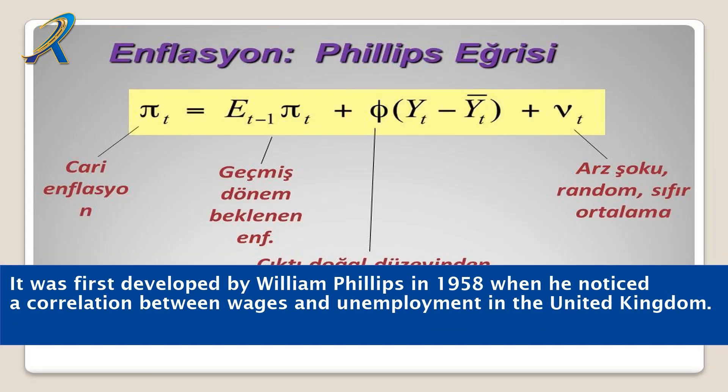It was first developed by William Phillips in 1958 when he noticed a correlation between wages and unemployment in the United Kingdom.